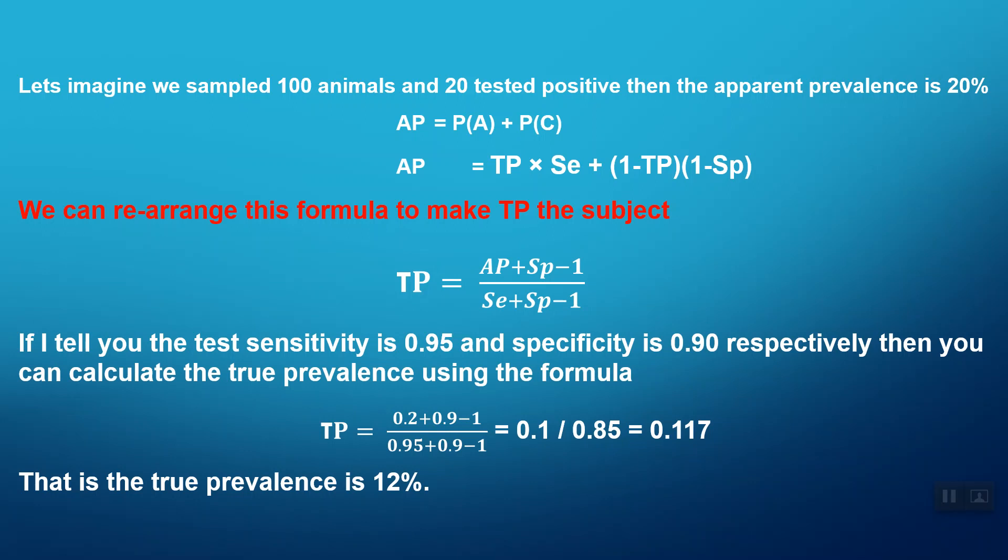Just to reiterate, we can determine the true prevalence if we know what proportion tested positive, we know the test sensitivity, and we know the test specificity. We can backtrack—there is a formula to do it which uses those values. You can determine that formula from first principles, and I find it easiest to do with event trees.